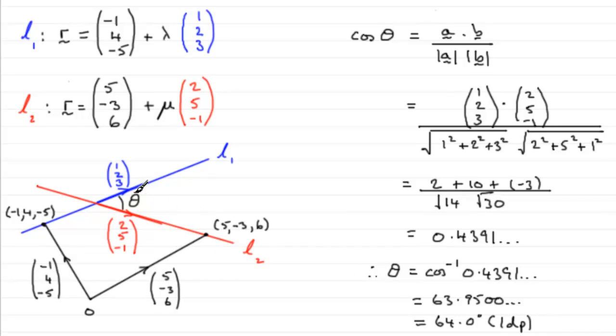So that gives us the angle between our two lines, L1 and L2, just by using the direction vectors. Hope that gives you some idea how to handle questions like that. Thank you.